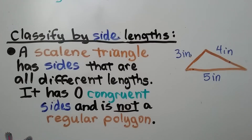A scalene triangle has sides that are all different lengths. It has zero congruent sides, and it is not a regular polygon.